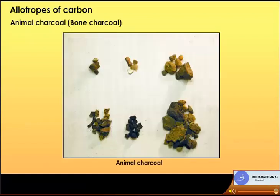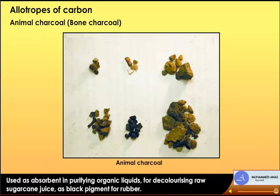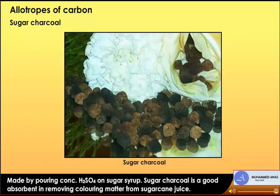Wood charcoal is also used as a decolorizing agent and as a reducing agent for making gunpowder. Animal charcoal, or bone charcoal, is prepared by the destructive distillation of bones. Uses: as an absorbent in purifying organic liquids, for decolorizing raw sugarcane juice, and as a black pigment for rubber. Sugar charcoal is made by pouring concentrated sulfuric acid on sugar syrup and is a good absorbent for removing coloring matter from sugarcane juice.